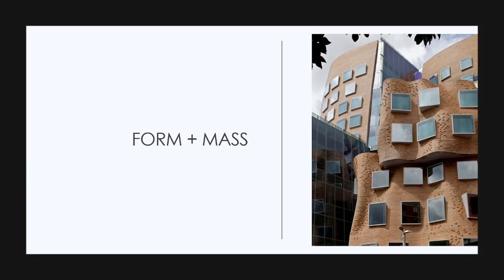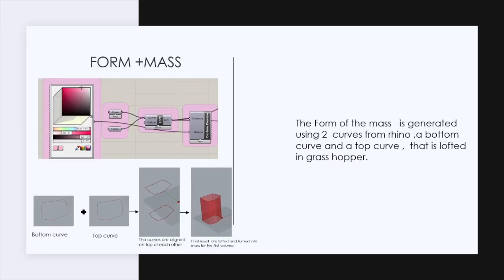So the first element is the form and mass, as it is generated using two curves from Rhino, a bottom curve and a top curve that are lofted in Grasshopper. And this definition is repeated eight times since we have five upper floor slabs and three lower floor masses.